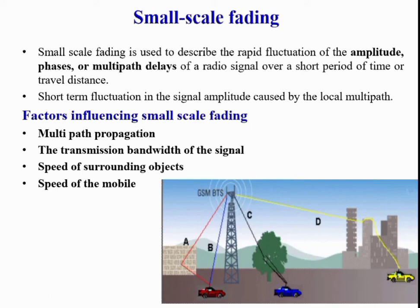Small scale fading is used to describe the rapid fluctuation of amplitude, phase, or multipath delay of a radio signal over a short period of time or travel distance — specifically, short-term fluctuation in signal power amplitude caused by local multipath. Factors influencing small scale fading are: multipath propagation, transmission bandwidth of the signal, speed of surrounding objects, and speed of the mobile.